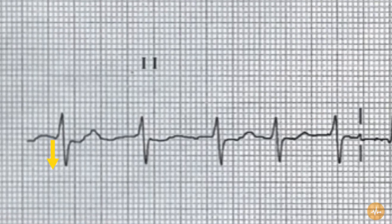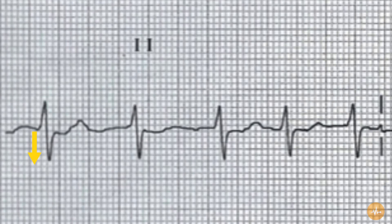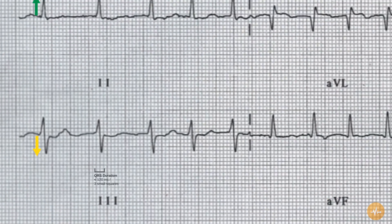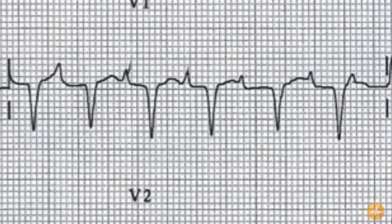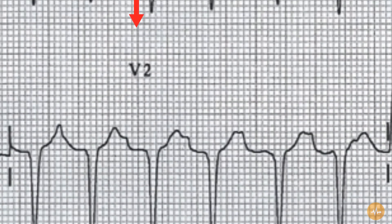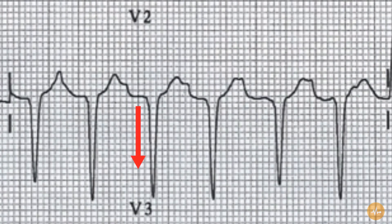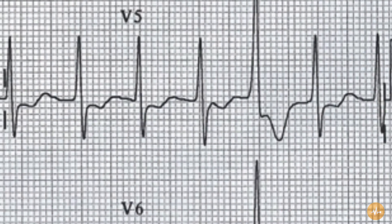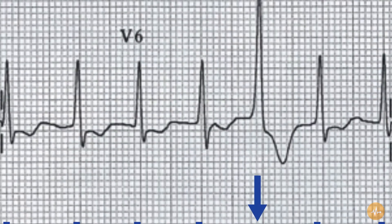The QRS duration is normal at less than 3 small squares, but there are deep pathological Q waves present in leads V1 and V2. There is ST segment depression and T wave inversion present in both leads V5 and V6.